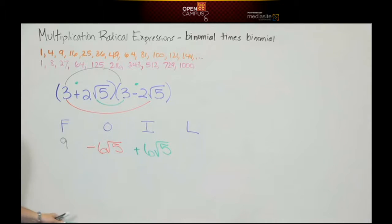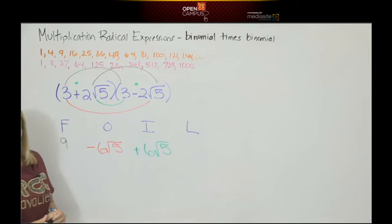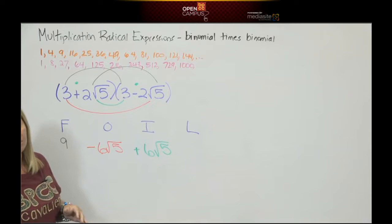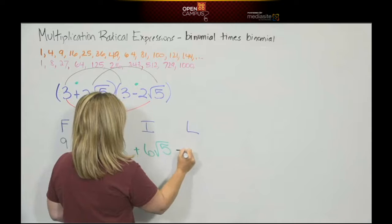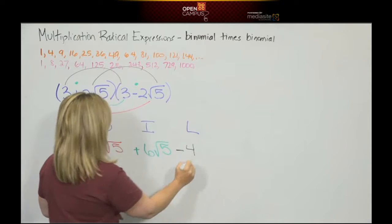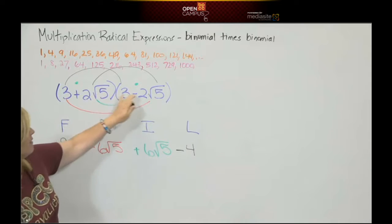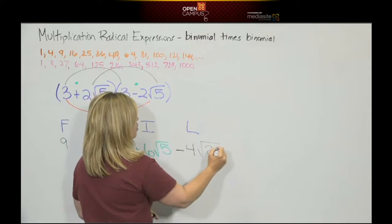Last is his other eyebrow. 2 square roots of 5 times negative 2 square roots of 5. We've been through this. We're multiplying, not subtracting. A positive times a negative is a negative. 2 times 2 is 4. Square root of 5 times square root of 5, we can multiply that and we'll get square root of 25.